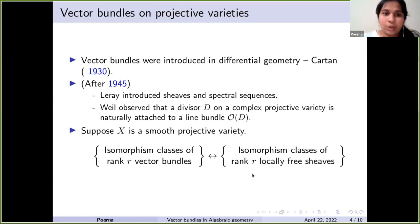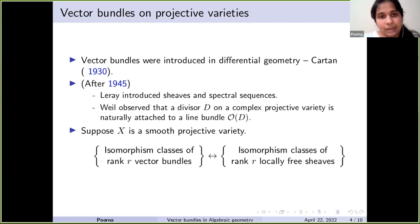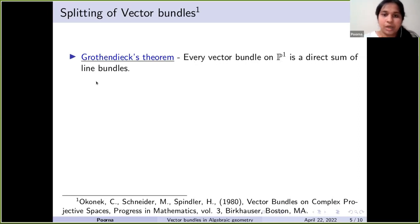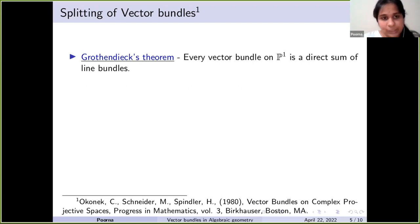One particular question in the theory of vector bundles that has been of interest since then is the structure of vector bundles — specifically, whether a given vector bundle splits into a direct sum of vector bundles of smaller rank. The first result in this direction was by Grothendieck: he proved that every vector bundle on P¹ is a direct sum of line bundles. P¹ is in some sense the simplest variety, and we know all the line bundles on it.